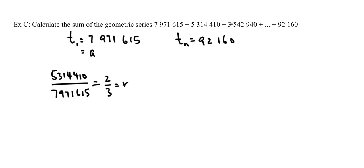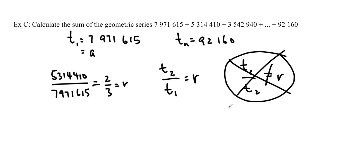And you can double check by doing 3,542,940. You divide it by 5,314,410. And you should also get 2 over 3. Now the real temptation here is to always do the division of the bigger number divided by the smaller number. Make sure you are doing the second term over the first term, right? It's always got to be t2 over t1 to get r. It's not the other way around. So it's really, really tempting to do t1 over t2. But that will not be equal to r. So don't do that. Okay?